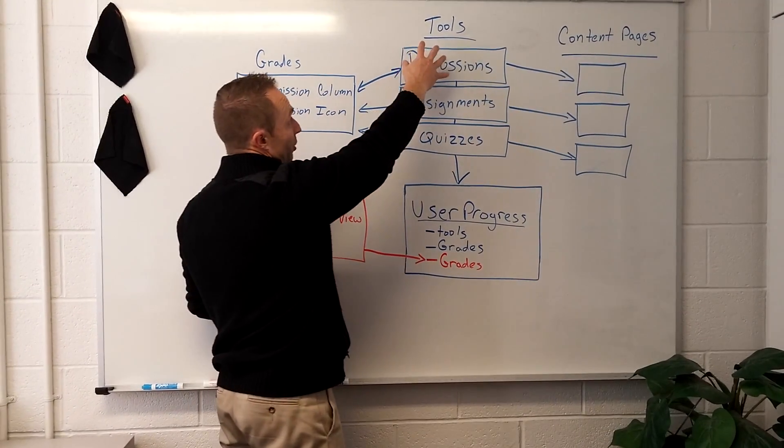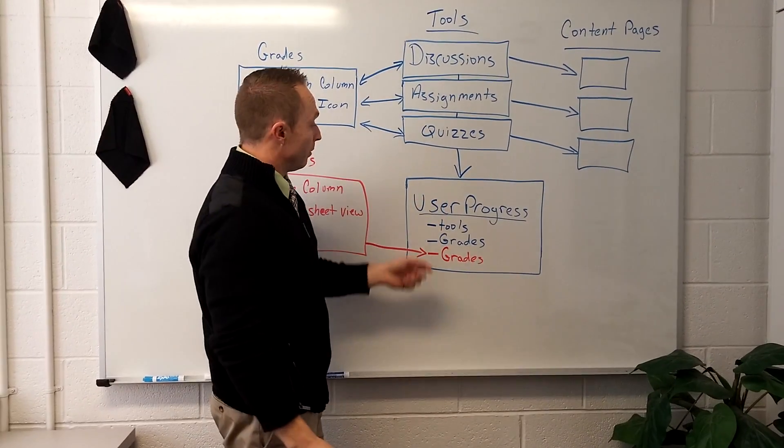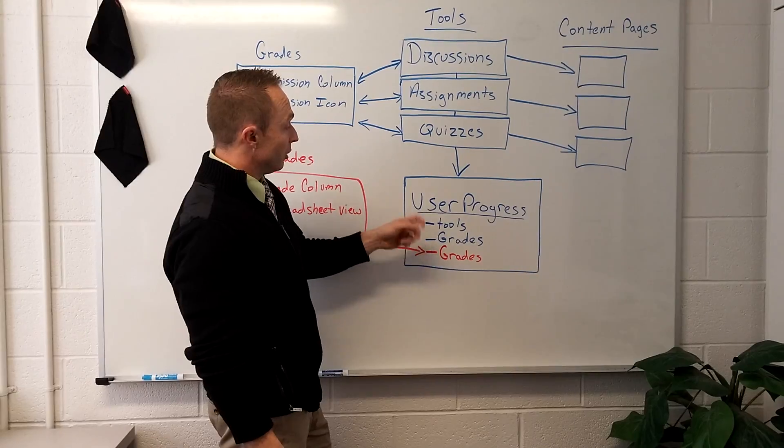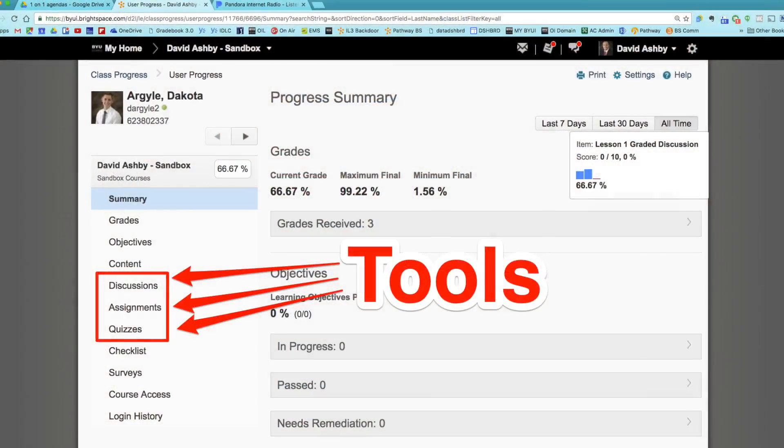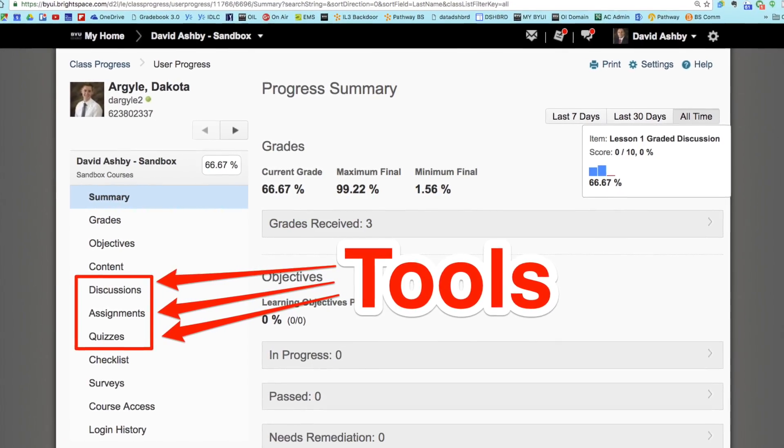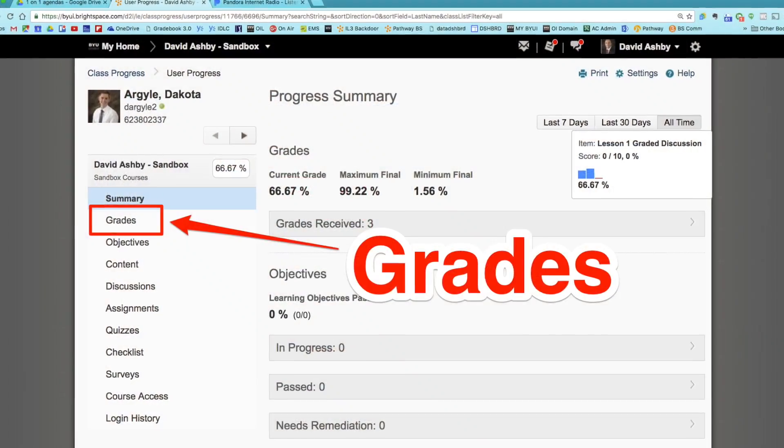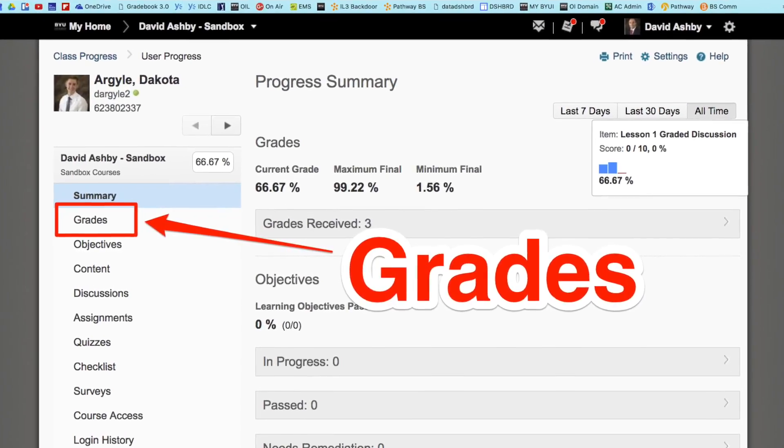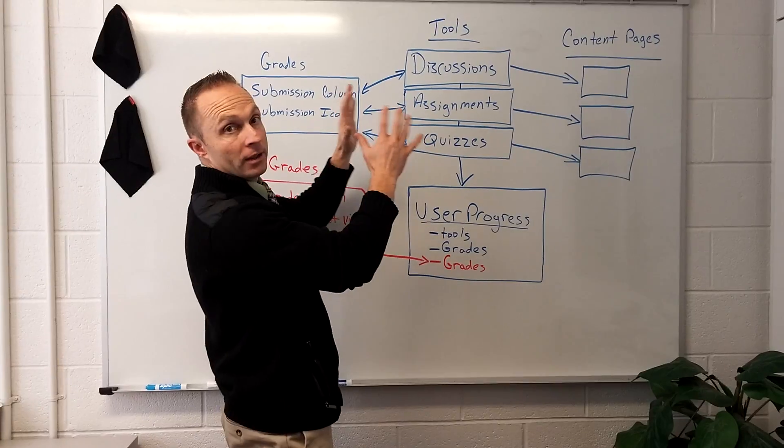We also found out that when you put the grade in the tool, it pushes to user progress. And within user progress, it could be seen in tools. So in user progress, there's the sidebars for assignments, quizzes, and discussions. They can see it there. And they can also see it in user progress grades. So that was the main reason why we had you grade in the tool.